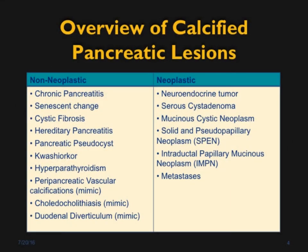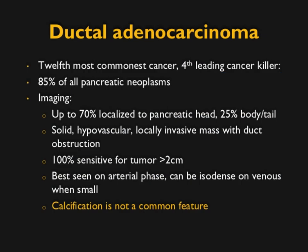Looking at calcified pancreatic lesions, here's a nice list of non-neoplastic and neoplastic causes — from serous cystadenomas to SPEN, metastasis such as renal cell, and many benign causes including pseudocyst and vascular calcifications.